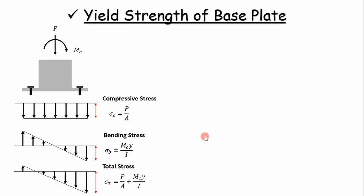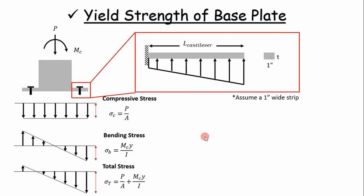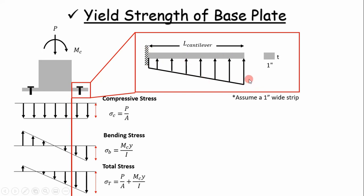Now we can design the base plate thickness. The first thing you want to do is a model simplification — treat this overhang as a cantilever beam. You'll have a cantilever beam of a certain length with a load distribution. I split this load and calculate the load distribution at each point due to compressive and bending stresses, then connect those with a line. This force acting on the beam is equal and opposite to the force acting on the concrete.